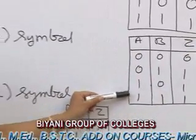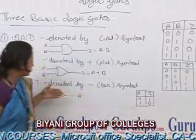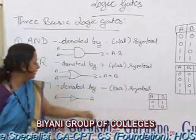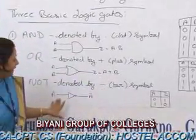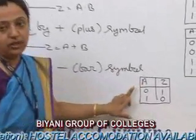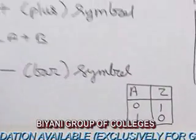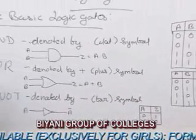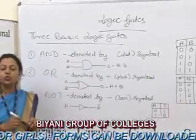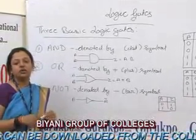If we enter both 1 then we get 1. The last is NOT gate. It is denoted by bar symbol. In this, if we enter A=0 then we get 1. If we enter 1 then we get 0. In logic gates, 0 is used for false value and 1 is used for true value.